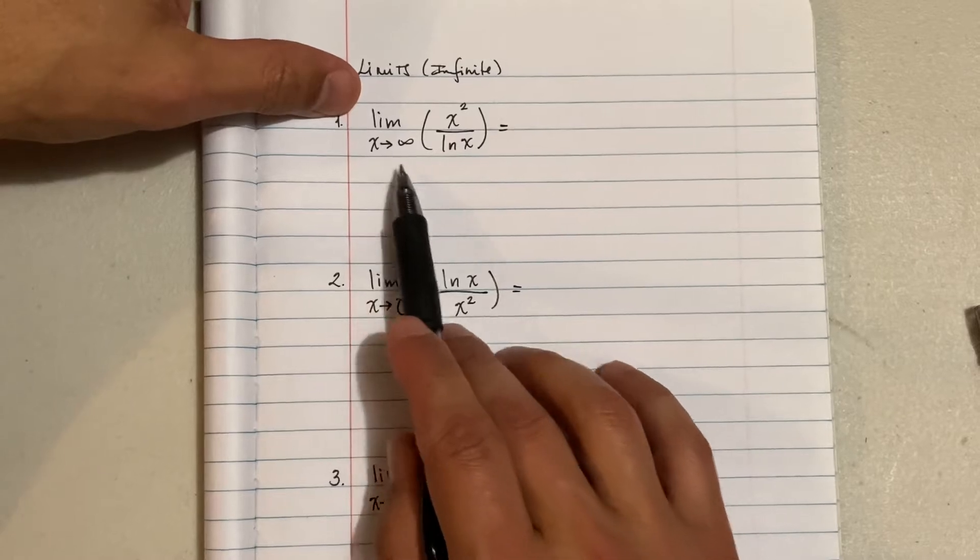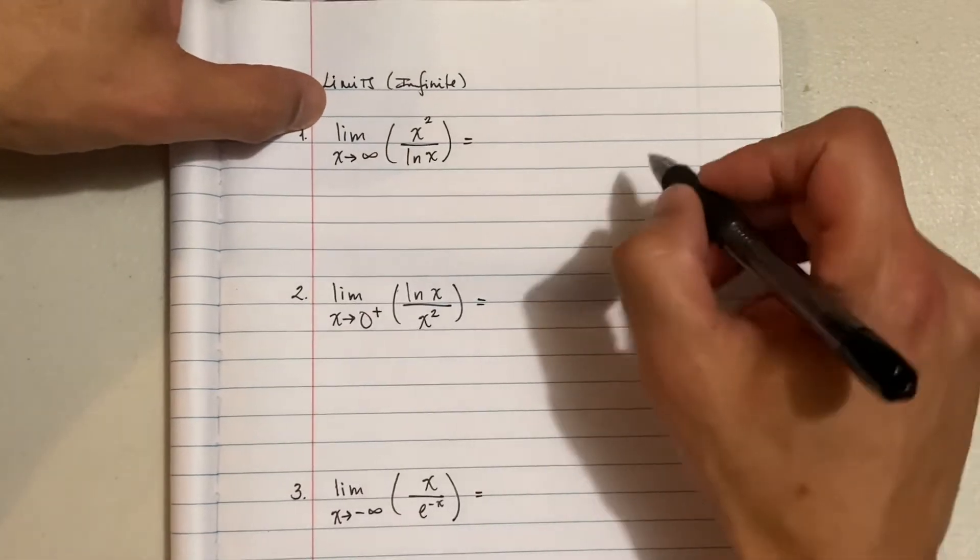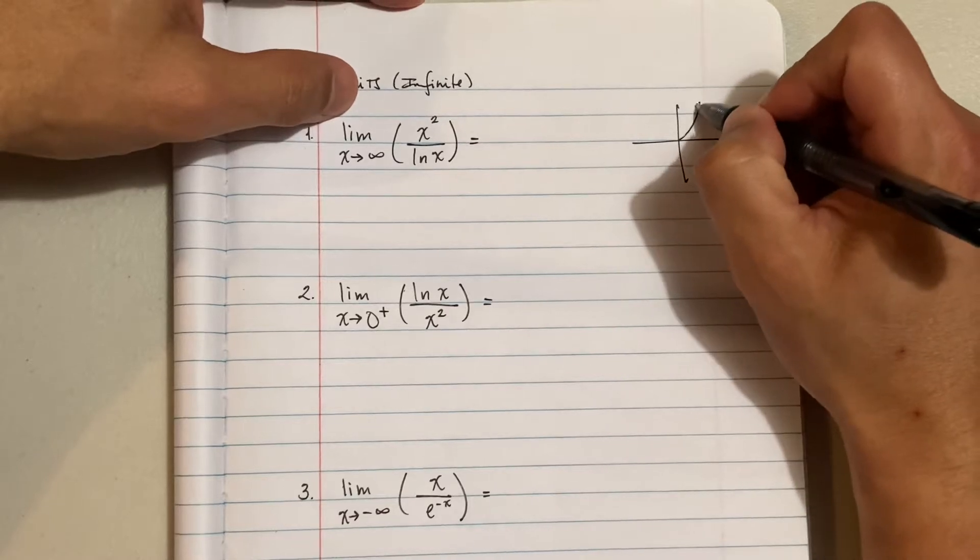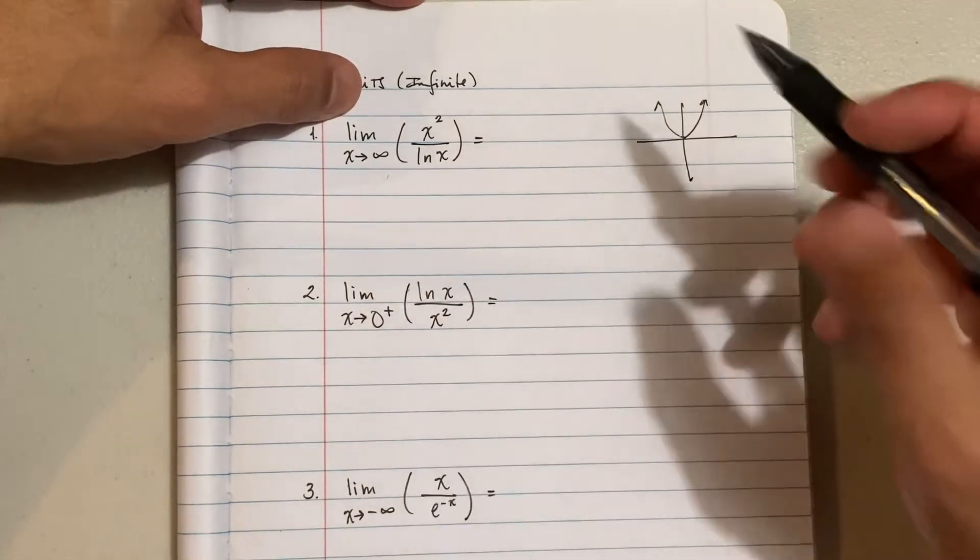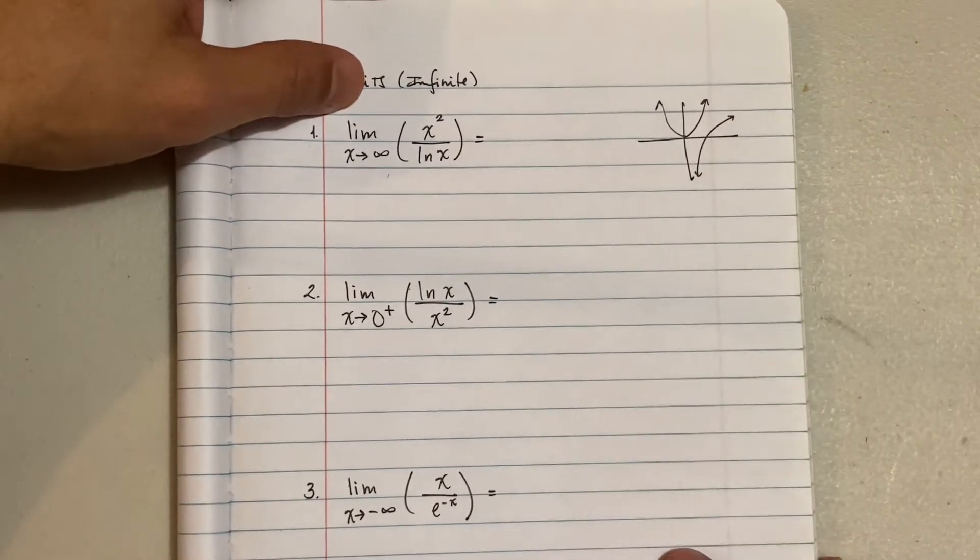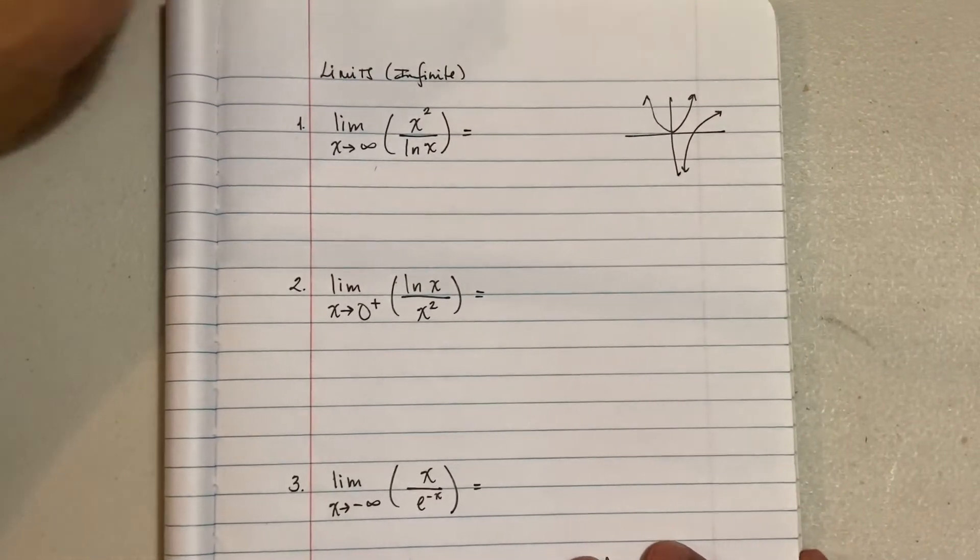So the first one is x approaches infinity. And I want you guys to think about this. What does x squared look like? Well, you guys know what that looks like. It looks like this. And what about ln of x? Well, it should look like that. If you want to go ahead and pause and see what you would get, go ahead.